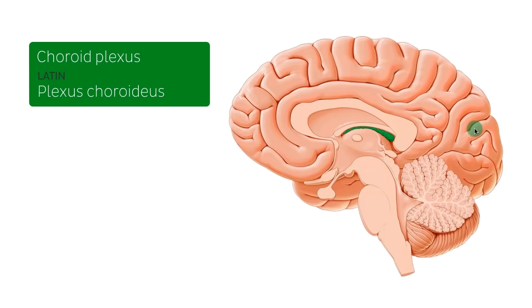We have our corpus callosum here, our fornix here, and our thalamus and interthalamic adhesion just here — and those are all of course part of the forebrain and the midbrain which surrounds the choroid plexus.